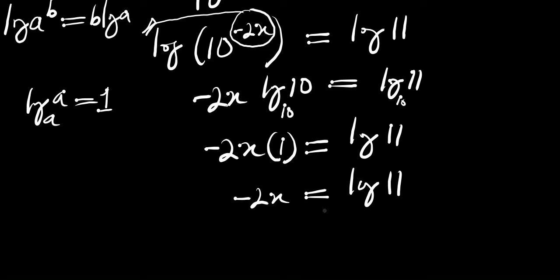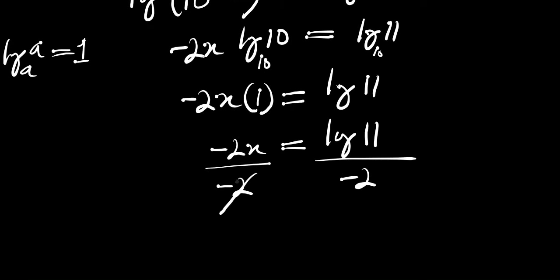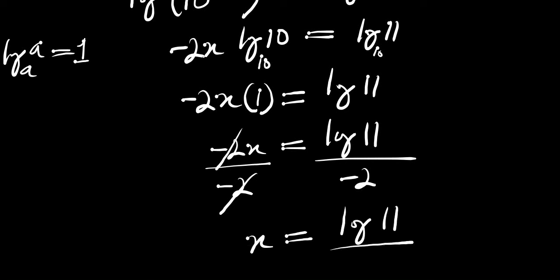Now if you multiply by 1, we have negative 2x equals log of 11. Let's go ahead and solve for x by dividing both sides by negative 2. Negative 2 will cancel negative 2, and we have x equals log of 11 divided by negative 2. We can also rewrite this as negative 1 over 2 times log of 11.